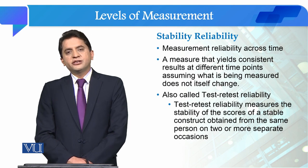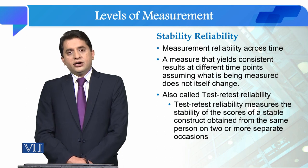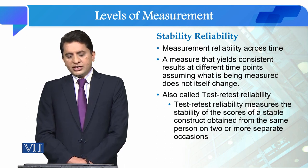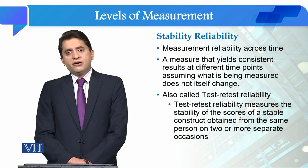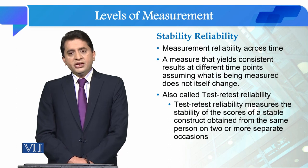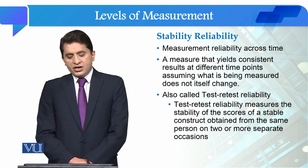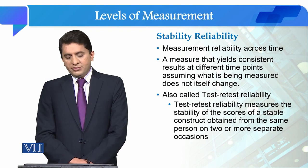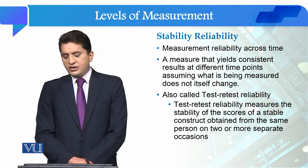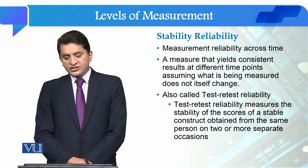We are interested in understanding what kind of result a measure produces over the period of time — the consistency of the measure in producing results. We call this test-retest reliability. Test-retest reliability measures the stability of the scores of a stable construct obtained from the same person on two or more separate occasions.